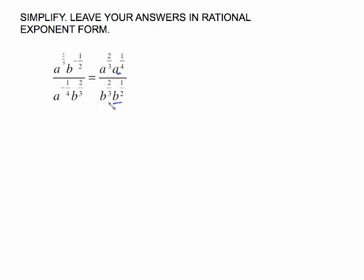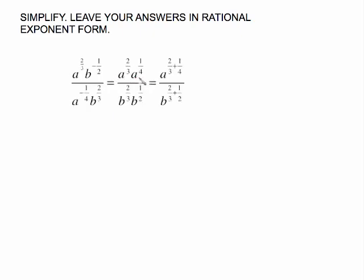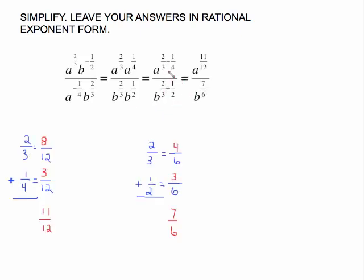Now we'll use our exponent laws. This is multiplying, so when you multiply you keep the base and add the exponents. So this will just be a to the two-thirds plus one-fourth. The denominator is the same situation — keep the base, add the exponents. If you have a calculator that does fractions, just type it in and you get eleven-twelfths here and seven-sixths here.